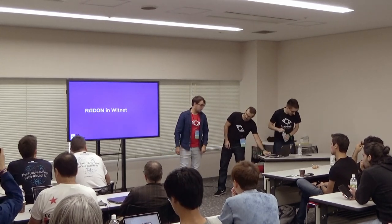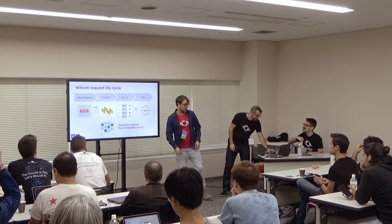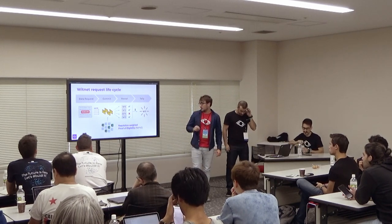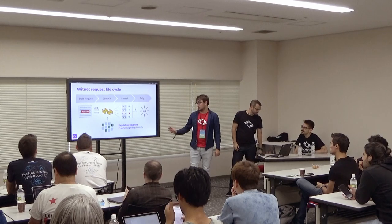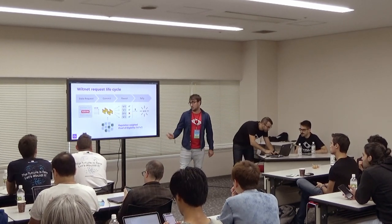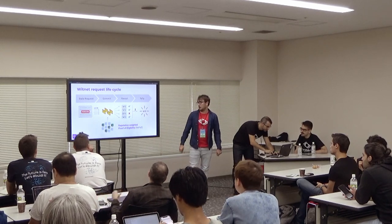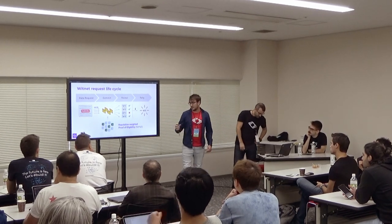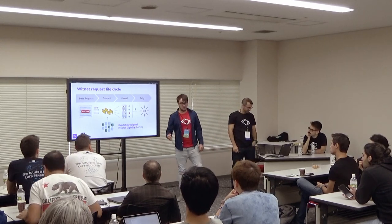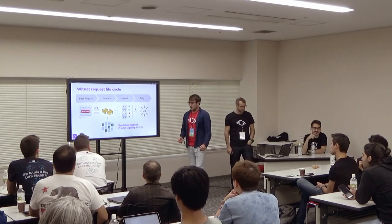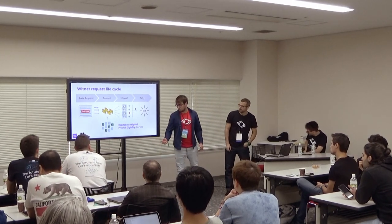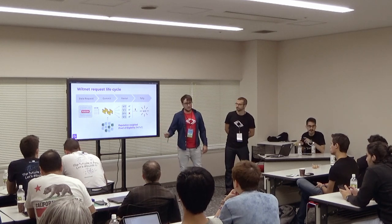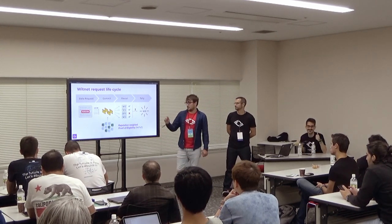Alan just explained what Radon is and how it works. Let's see how we use it in our specific use cases. We send this to the network, which has a data request lifecycle. We have four main phases. We start by inserting the bytecode that the data request references into Witnet. When that gets inserted, there's a pool of nodes selected to perform that task — we call those nodes witnesses. They're randomly selected so they can coordinate with each other through a cryptographic sortition scheme.